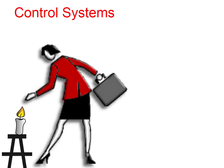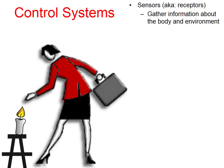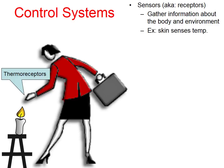A moment ago I mentioned that the body has control systems to cause change. We can break it down into a few categories. Control systems are made up of sensors or receptors. Receptors gather information about the body and the environment. In this case, there are thermoreceptors in the woman's hand that are gathering information about the candle she's getting too close to — heat is being detected by those thermoreceptors.